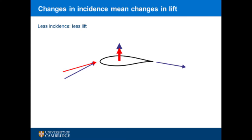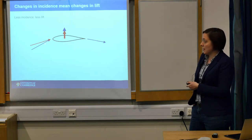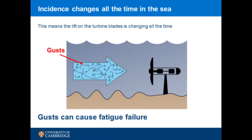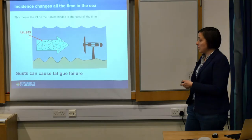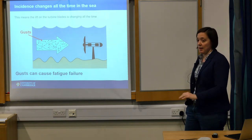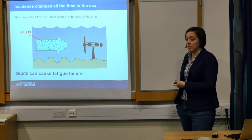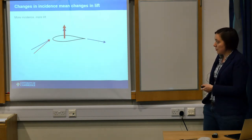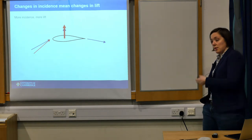If the incidence into the blade changes, the amount of turning changes and therefore the amount of force changes. Less incidence gives less lift; more incidence gives more lift. The tidal flow average is really predictable, but the sea has waves, an uneven seabed, and headlands — all of which combine to generate gusts. So the flow changes on a second-by-second basis. That means we suddenly have a change in incidence all the time — up and down, up and down — which means fluctuating lift, fluctuating torque.